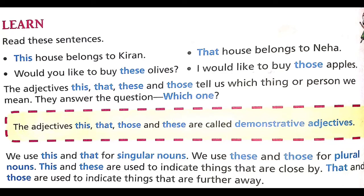This and these are used to indicate things that are close by. So if something is near to you or close by, we use this and these. Same way, if something is very far away, we use that and those.